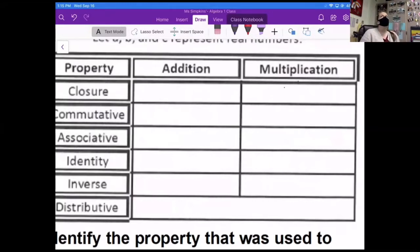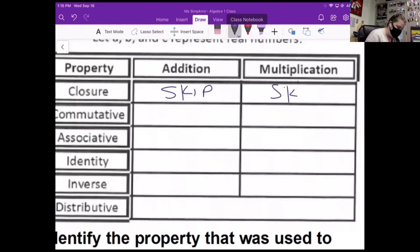So for now, we're going to skip the closure property. It's not necessarily appropriate for what we're talking about today, but in a couple of weeks, we'll come back to it. So I'm just going to write this word skip up here. We will come back. But for now, we're going to ignore the closure property.